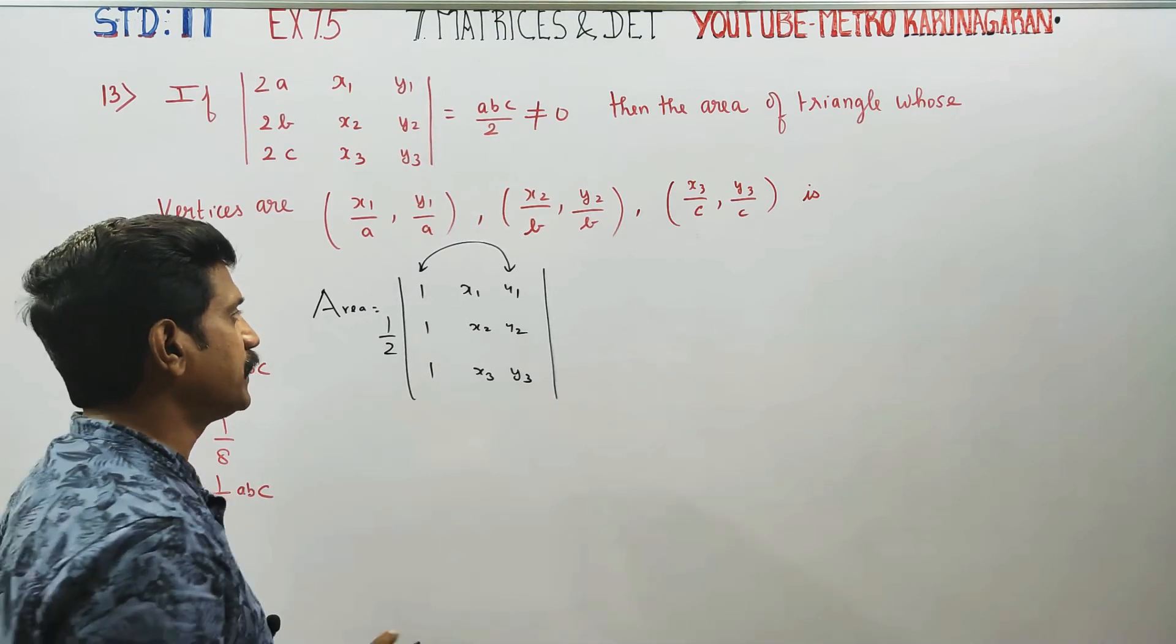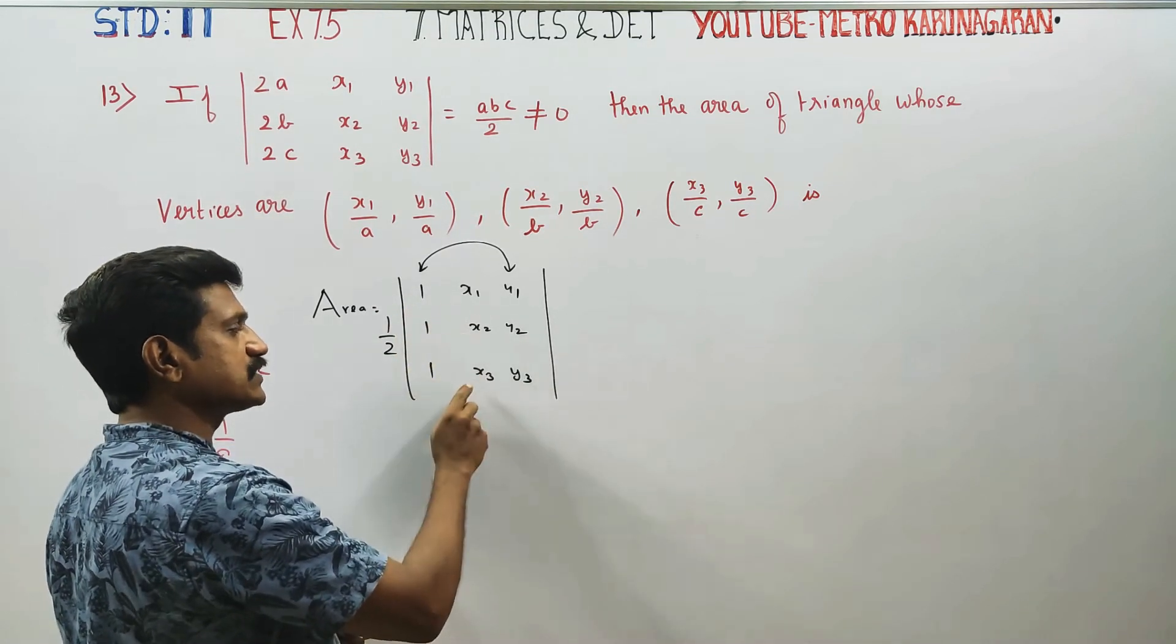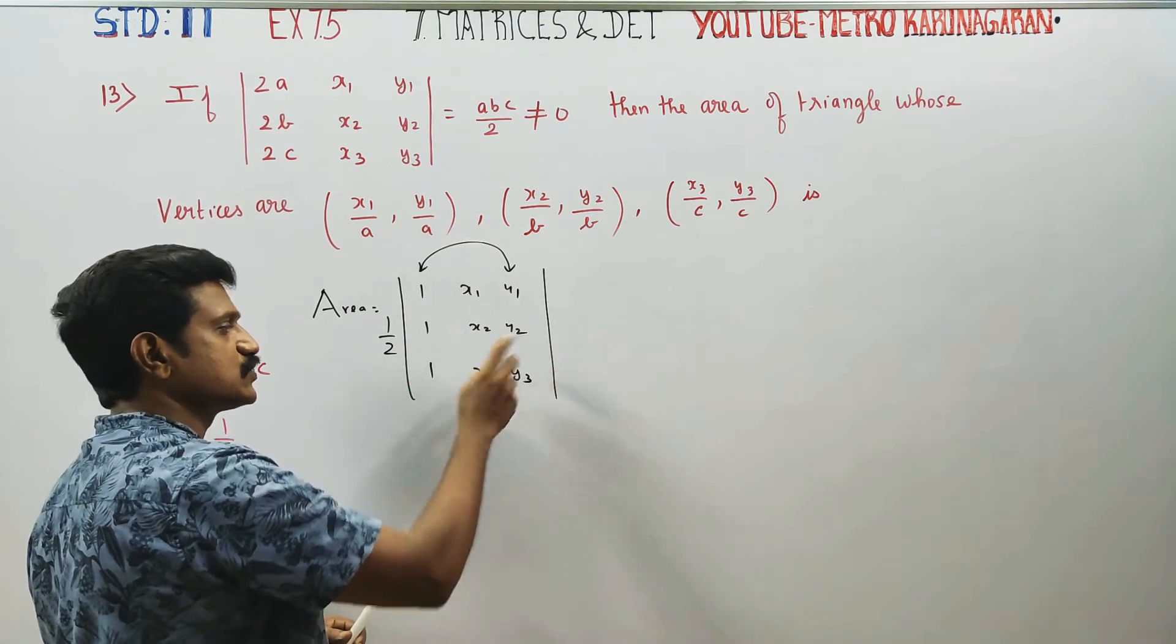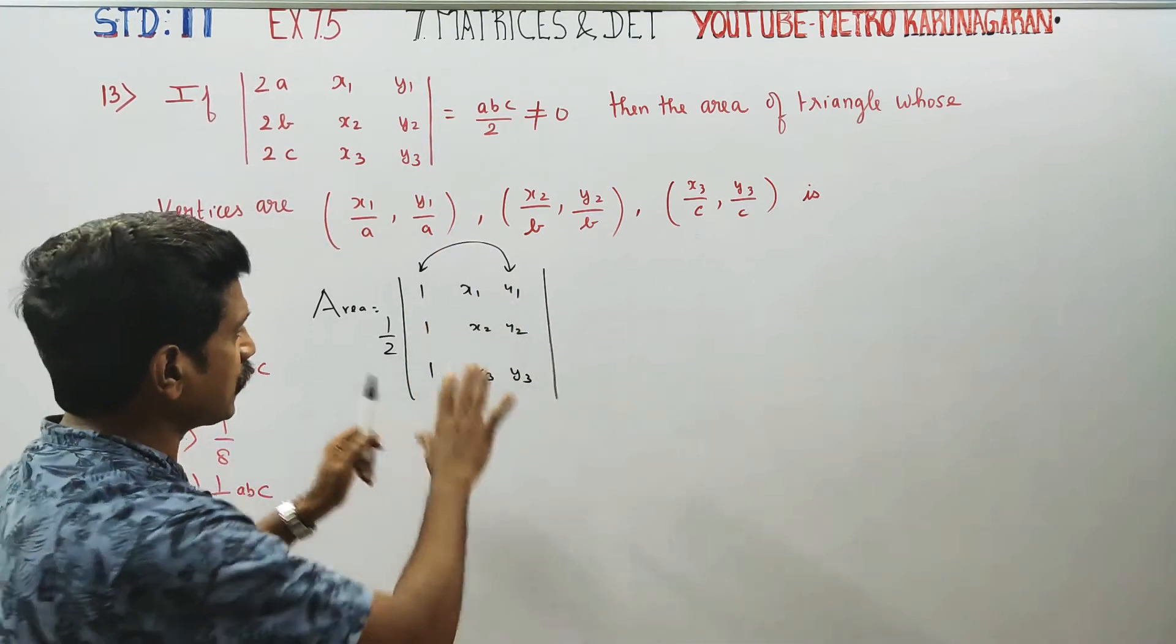There are two types of formula. The second arrangement places ones, then x and y coordinates: 1, 1, 1, x1, x2, x3, y1, y2, y3. This gives the same answer.